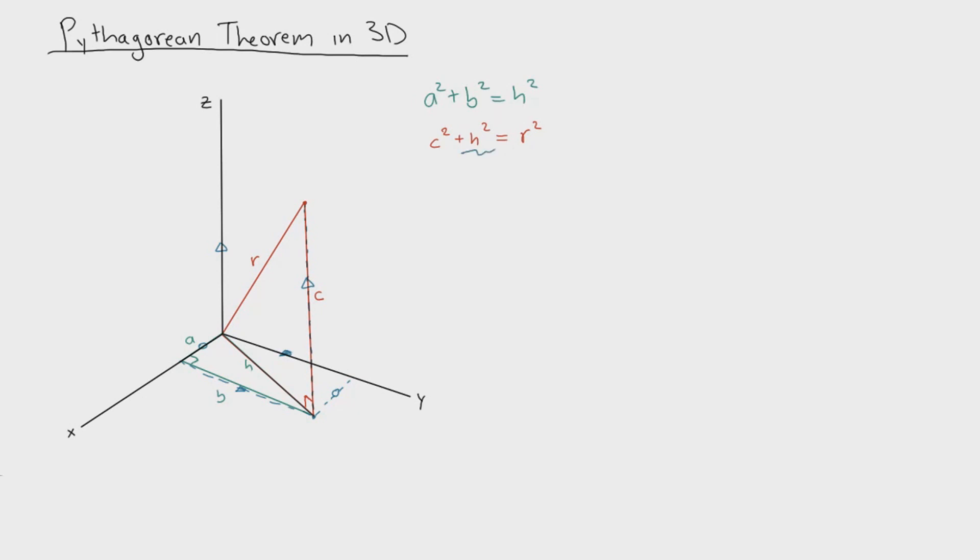And we actually know the value of h because we solved it in terms of a and b. So what we could say is that a squared plus b squared plus c squared equals r squared. And this right here is the Pythagorean theorem in 3D.